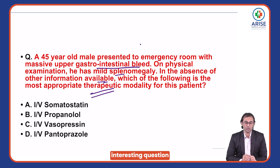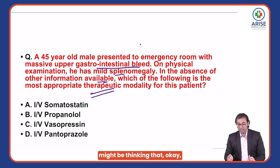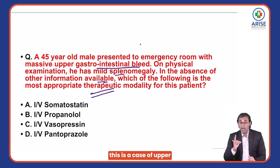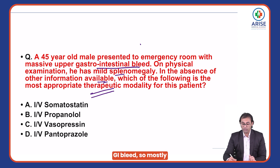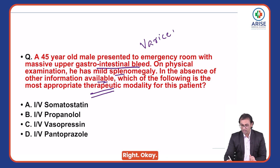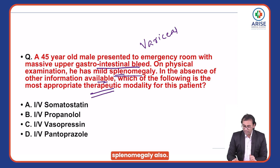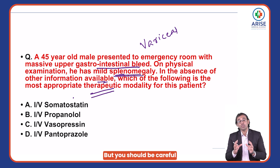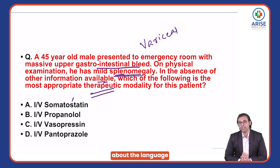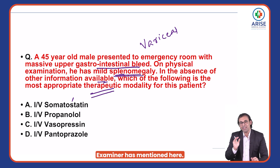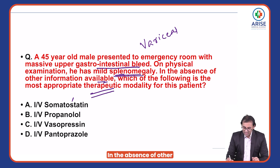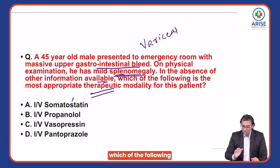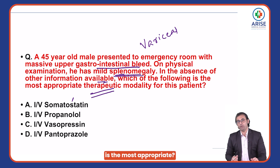This is an interesting question where some of you might be thinking that this is a case of upper GI bleed — mostly variceal bleeding — because there is splenomegaly also. But you should be careful about the language of the examiner. The examiner has mentioned here: 'in the absence of other information available, which of the following is the most appropriate?'